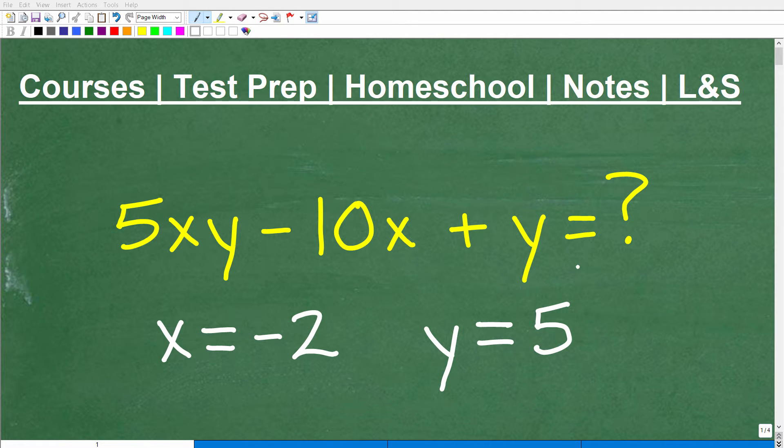Okay, so if you're taking any sort of algebra course, and I'm talking about things like pre-algebra, algebra 1, certainly algebra 2, you're definitely going to have to know how to do a problem like this. And this is not that difficult. The problem would go something like this: Evaluate the variable expression for the following values. So we want to evaluate 5xy minus 10x plus y. We want to know what this is equal to if we let x is equal to negative 2 and y is equal to 5.